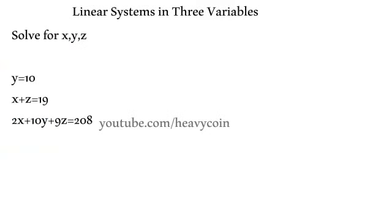Okay, so they're giving us y is equal to 10, x plus z is equal to 19, and 2x plus 10y plus 9z is equal to 208, or 208, I should say. So we want to find x, we want to find y, which actually they already gave us what y is, and then we want to find z. Alright, so what I'm going to do is I'm going to go ahead and start with this x plus z is equal to 19 here.